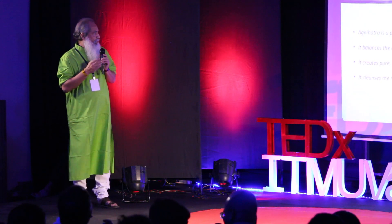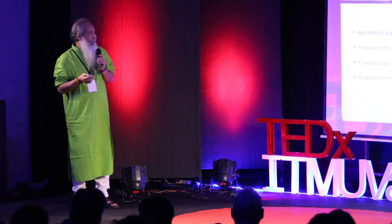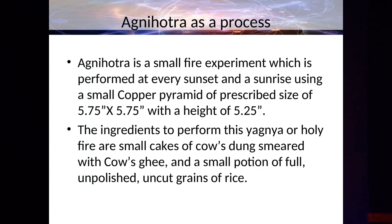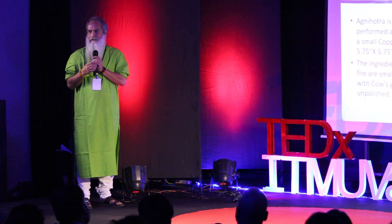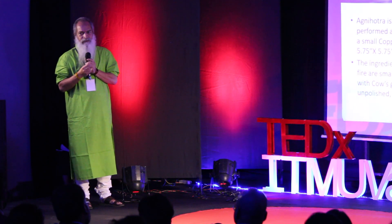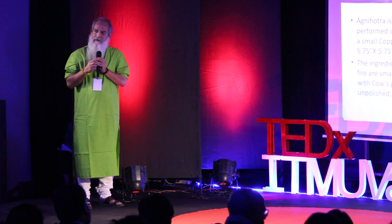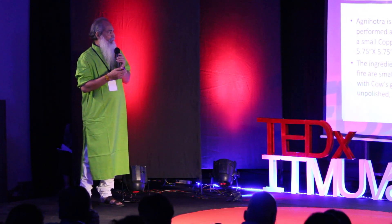Today Agnihotra is followed outside India more than probably within India, and it is very popular in the scientific community. Agnihotra is a small fire experiment performed every sunset and every sunrise using a small copper pyramid of prescribed size — 5.75 inches by 5.75 inches with a height of 5.25 inches. The ingredients to perform this yajna or holy fire are small cakes of cow's dung smeared with cow's ghee and a small portion of full, unpolished, uncut grains of rice — three ingredients in total.